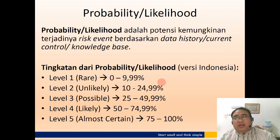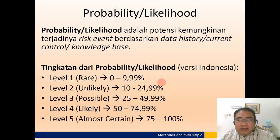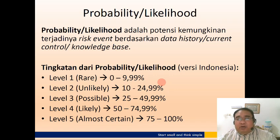Faktor kedua yang mempengaruhi resiko adalah probability atau likelihood — potensi kemungkinan terjadinya resiko tersebut. Semakin sering kemungkinannya, resikonya semakin besar. Ini juga ada lima level. Level 1 disebut rare: kemungkinan terjadinya 0 sampai di bawah 10%. Level 2 adalah unlikely atau jarang sekali terjadi: 10 sampai di bawah 25%. Level 3 possible atau sedang: 25 sampai di bawah 50%. Level 4 likely atau kemungkinannya besar: 50 sampai di bawah 75%. Dan level 5 almost certain atau hampir pasti terjadi: 75 sampai 100%.